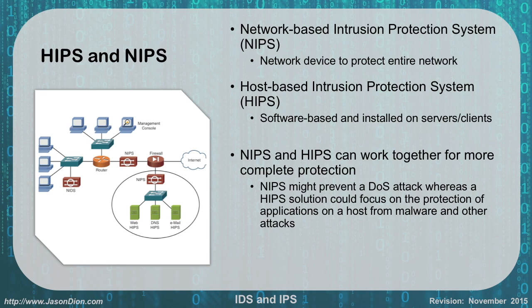We also have HIPS and NIPS. NIPS is a network-based intrusion protection system; HIPS is a host-based intrusion protection system. If the IPS is installed on a computer itself — a server or client — that's software-based and host-based: a HIPS. If it's a network device operating inline, that's a NIPS. NIPS and HIPS can both be on the same network and work together for more complete protection. The NIPS can prevent things like denial of service attacks or inbound network attacks, while the HIPS focuses on protecting applications from malware and other attacks that users may be vulnerable to.